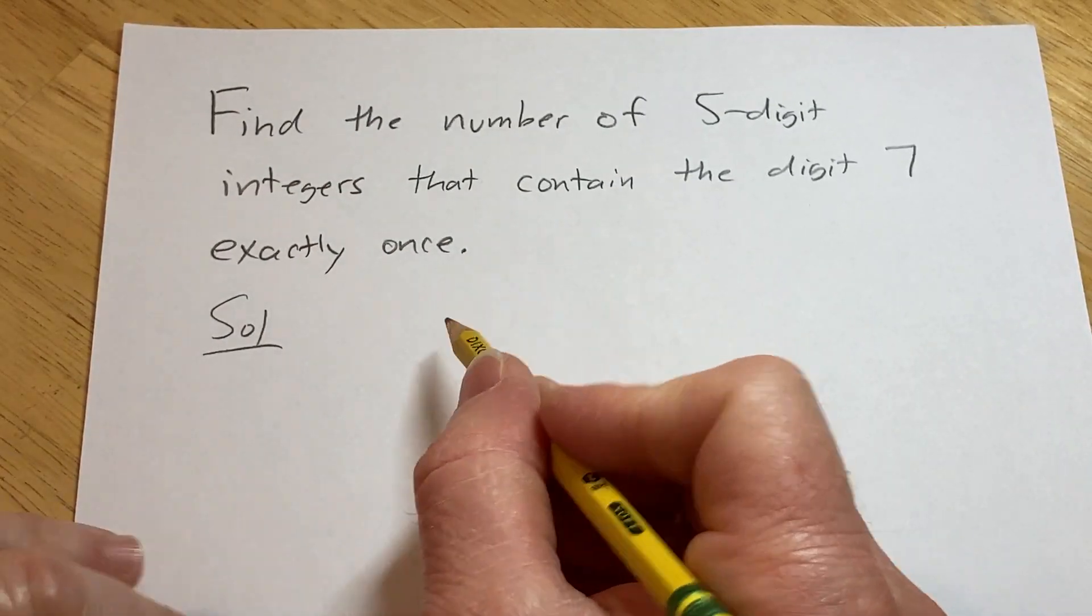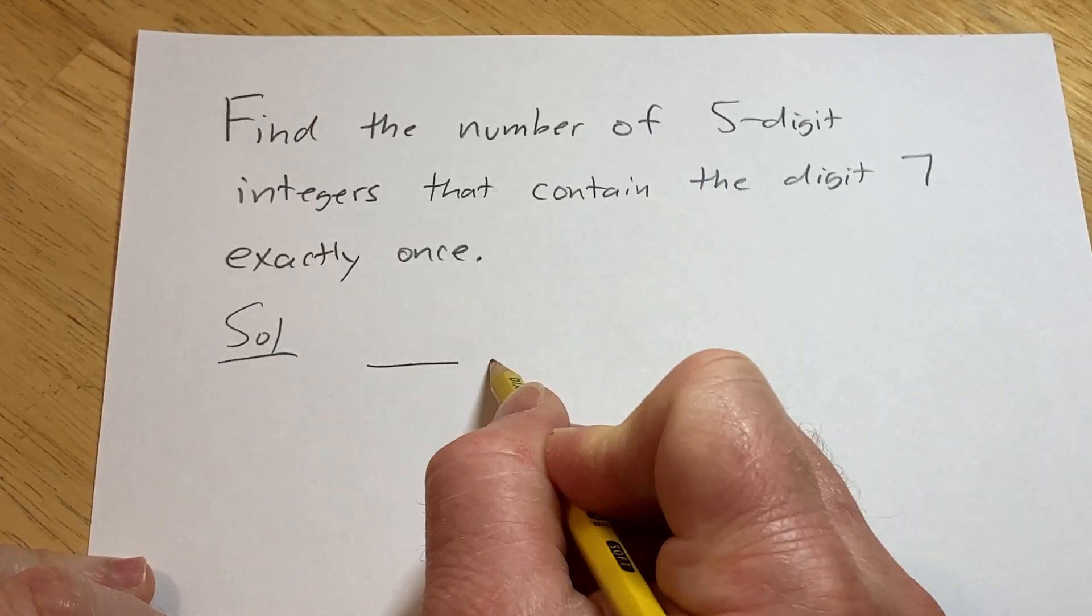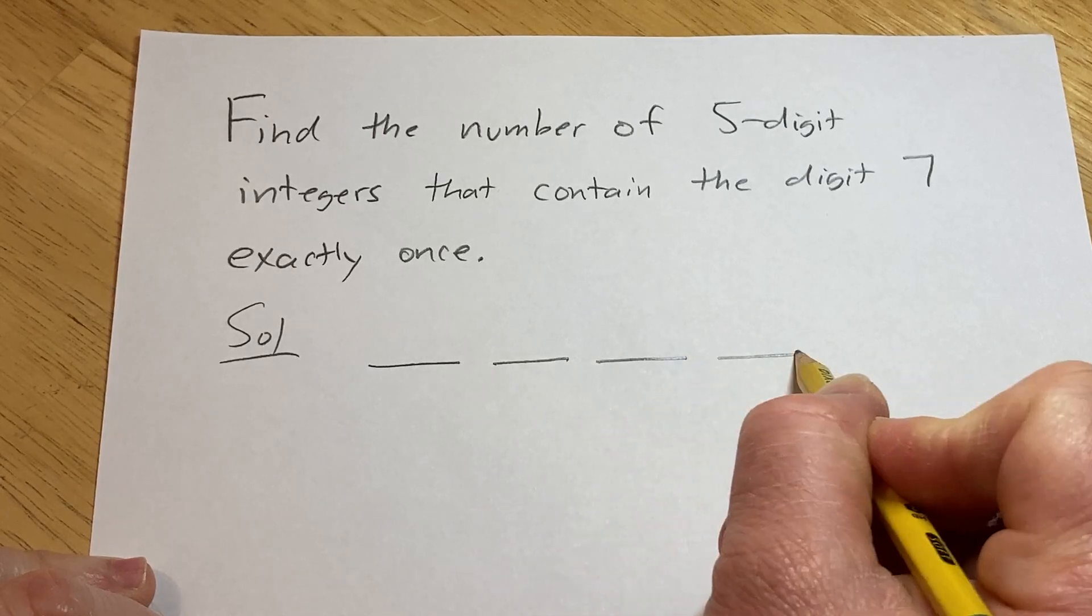So we're looking at five-digit integers. Let's draw a little picture. 1, 2, 3, 4, 5.